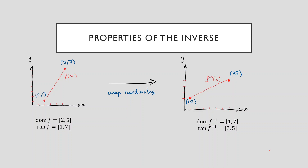Now let's check the domain and range of our inverse. Well, look at the domain — the domain goes from one to seven, and the range goes from two to five. And you can see that the domain of our original function, two to five, has become the range of our inverse, two to five. And the range of our original function, one to seven, has now become the domain of our inverse, which is also one to seven.